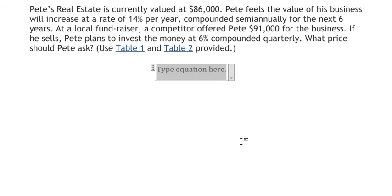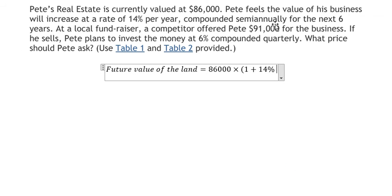I will show you the technique to answer this question. We need to find the future value of the land, the real estate. So we have $86,000 multiplied by (1 + 14%), but we need to divide by 2 because it's semi-annually.